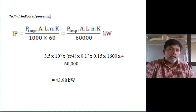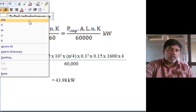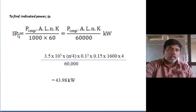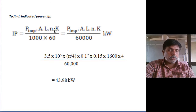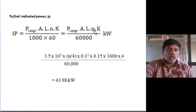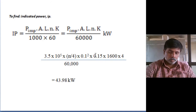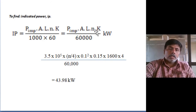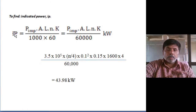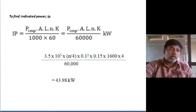The indicated power formula is PLAN: indicated mean effective pressure into length of stroke, area of the cylinder, number of power strokes, number of cylinders, divided by 1000 into 60. Using 3.5 into 10 to the power 5, pi by 4 times 0.1 squared, L equals 0.15, N equals 1600, K equals 4, divided by 60,000 — the indicated power equals 43.98 kW. This is the first method, based on the indicator diagram.